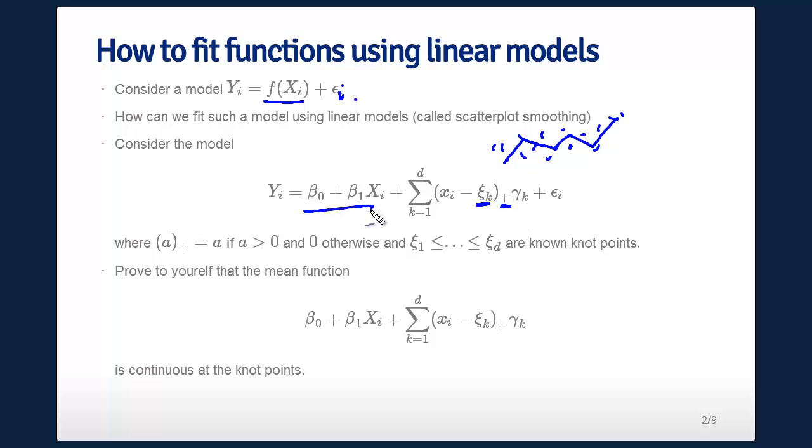Imagine we have a line, and then we have plus these guys times some other parameters, and then our epsilon_i. These guys are known. These are numbers. Given that we know our X's, we know these guys. What this little parenthesis plus means is it's a, if a is greater than 0, and 0 otherwise. So negative 1 plus is 0, 1 plus is 1, 2 plus is 2, negative 2 plus is 0, and so on.